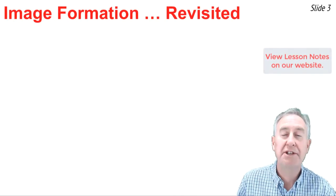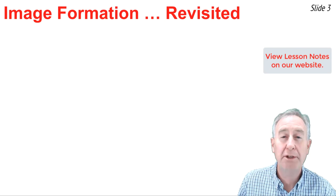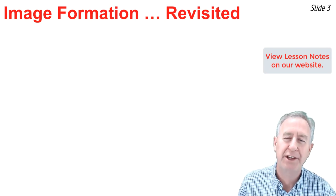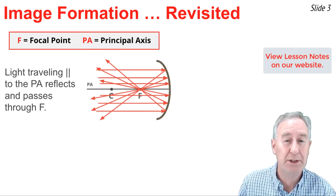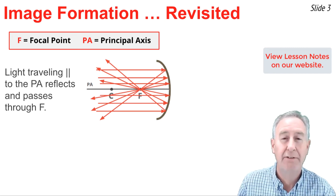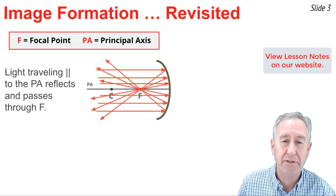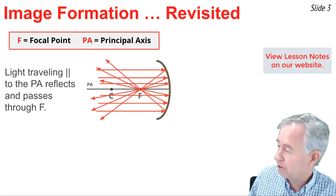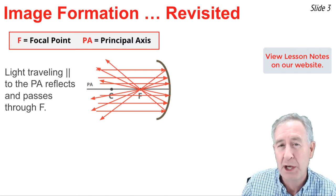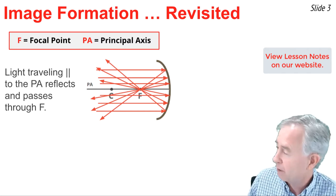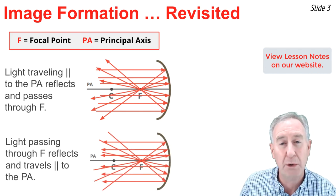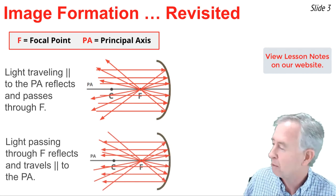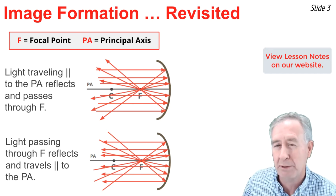In this video, I will be discussing how images form for convex mirrors. I'd like to begin that discussion by discussing how images form for concave mirrors. For concave mirrors, we understand that there are two special rules of reflection. One is that a ray of light traveling parallel to the principal axis will reflect and pass through the focal point. The other rule is that a ray of light that passes through the focal point on the way to the mirror reflects parallel to the principal axis.